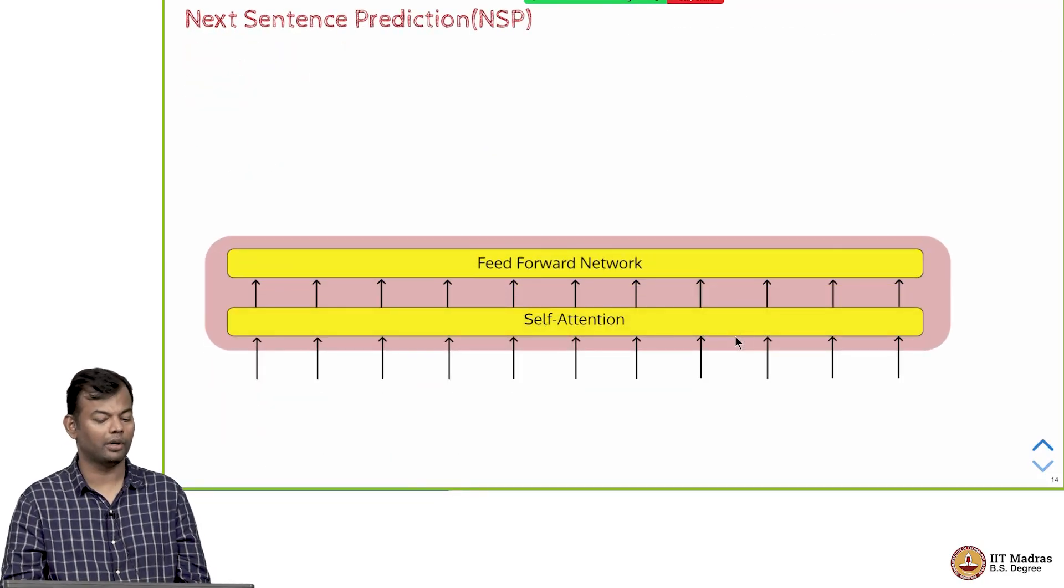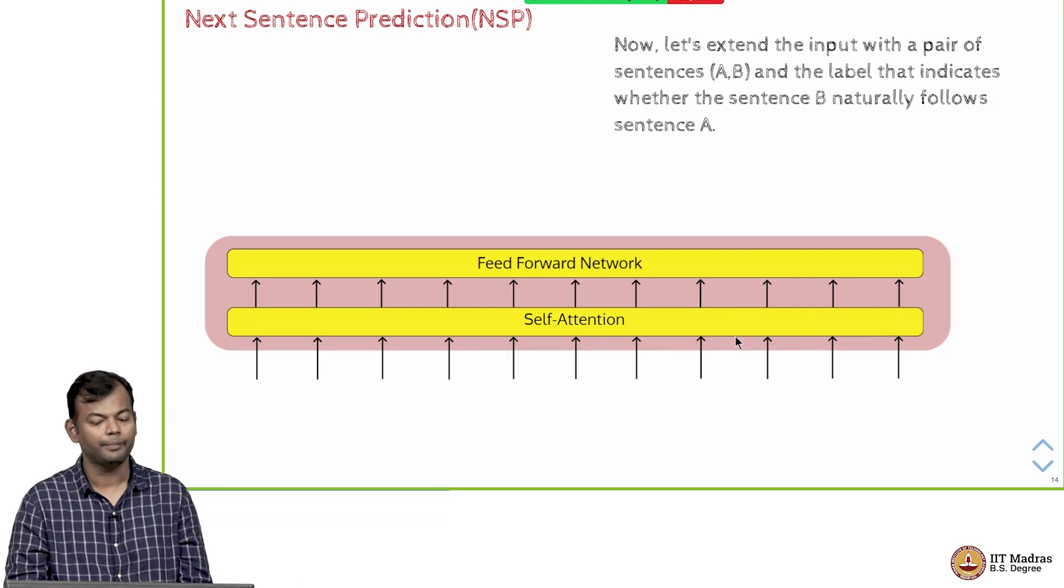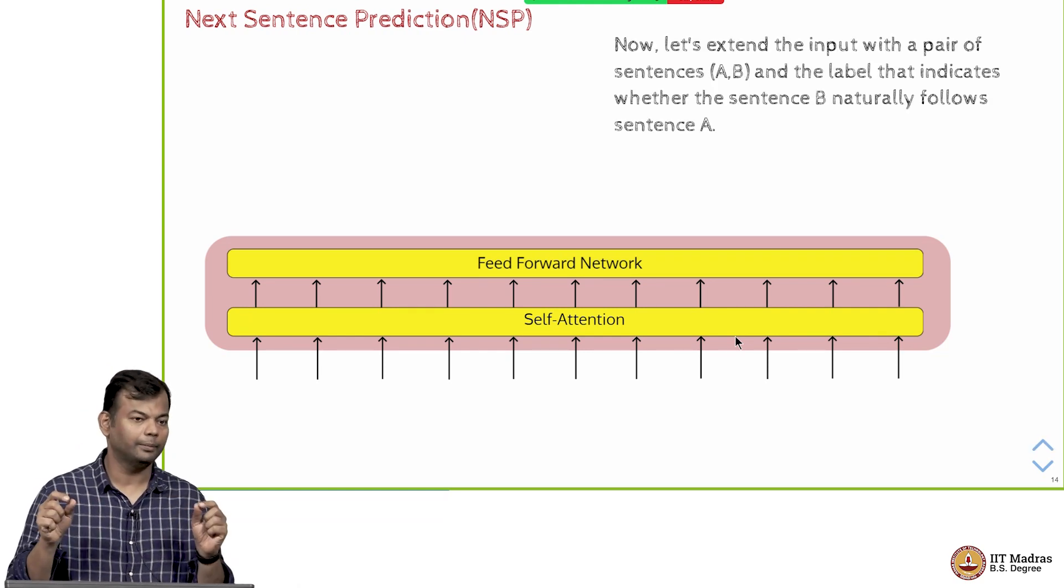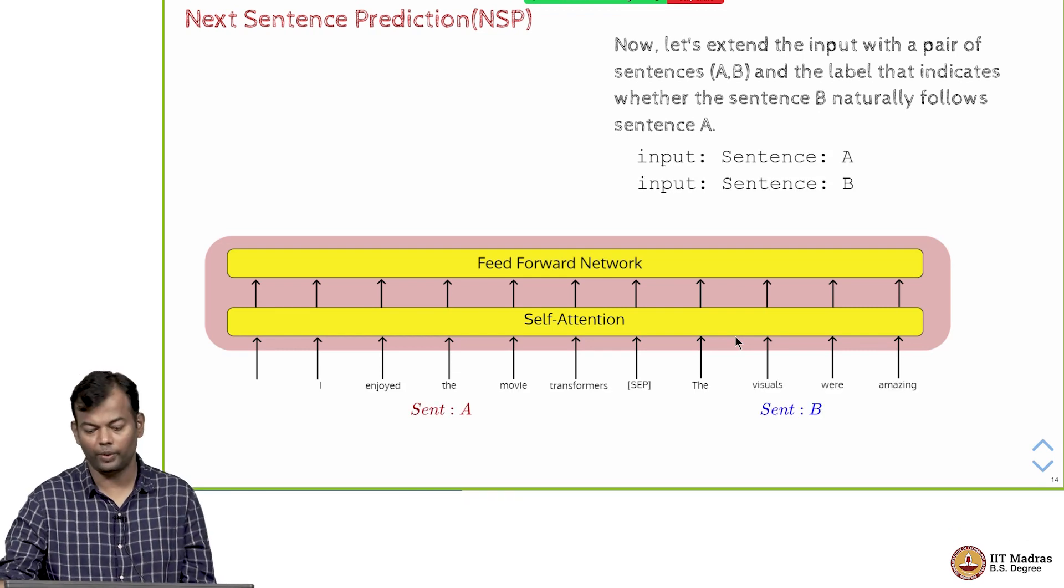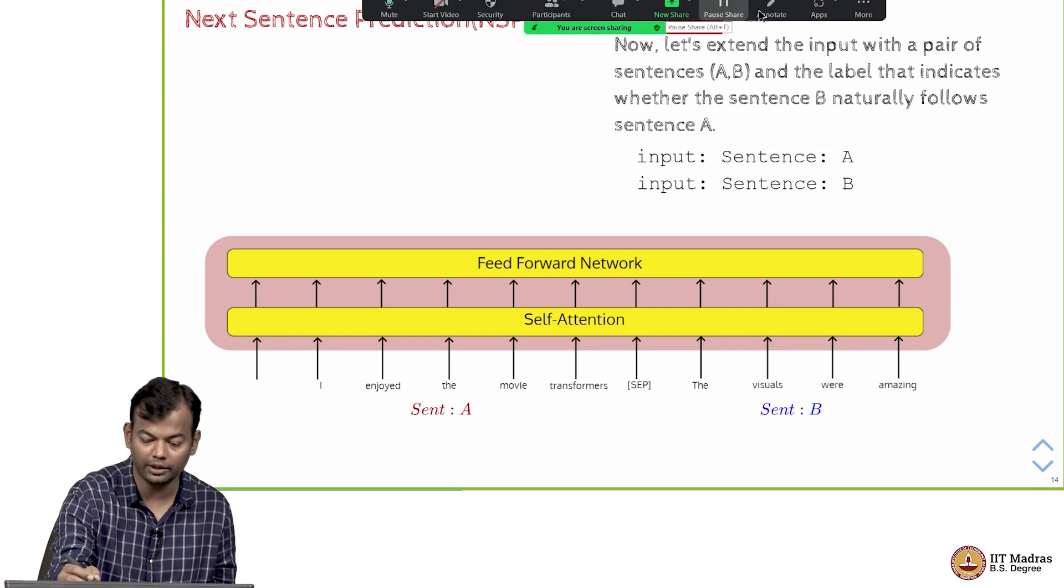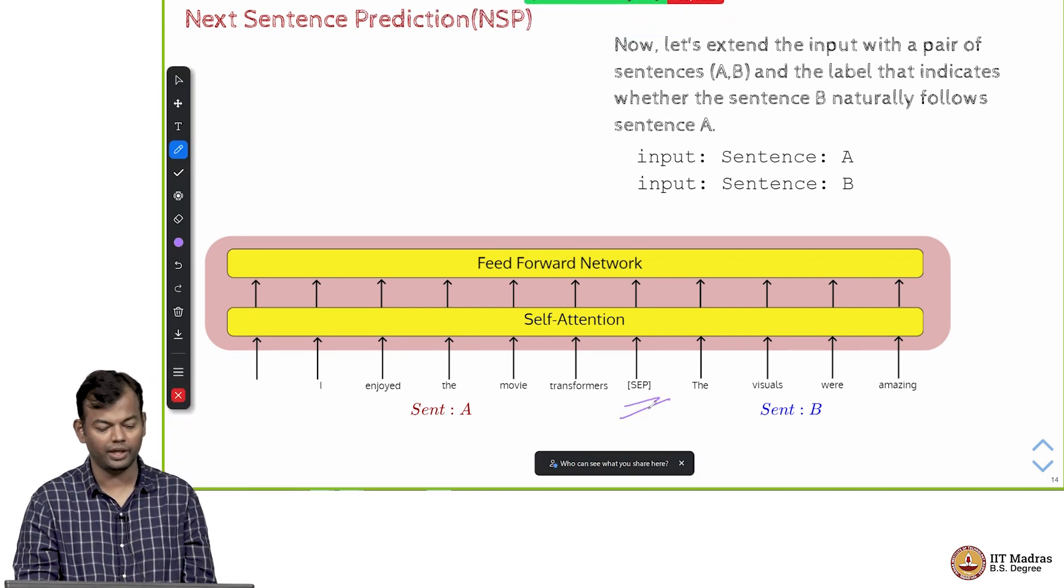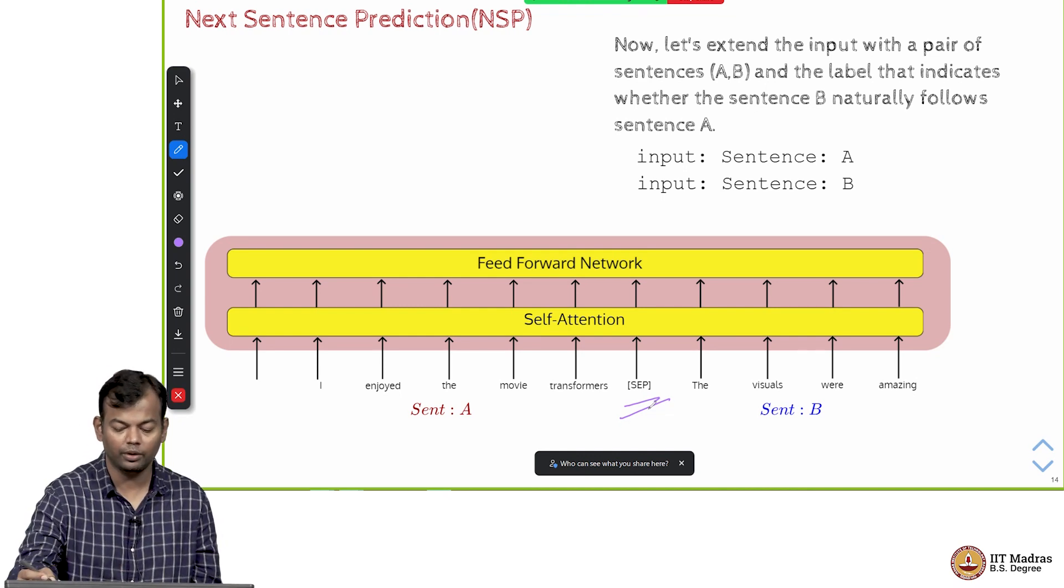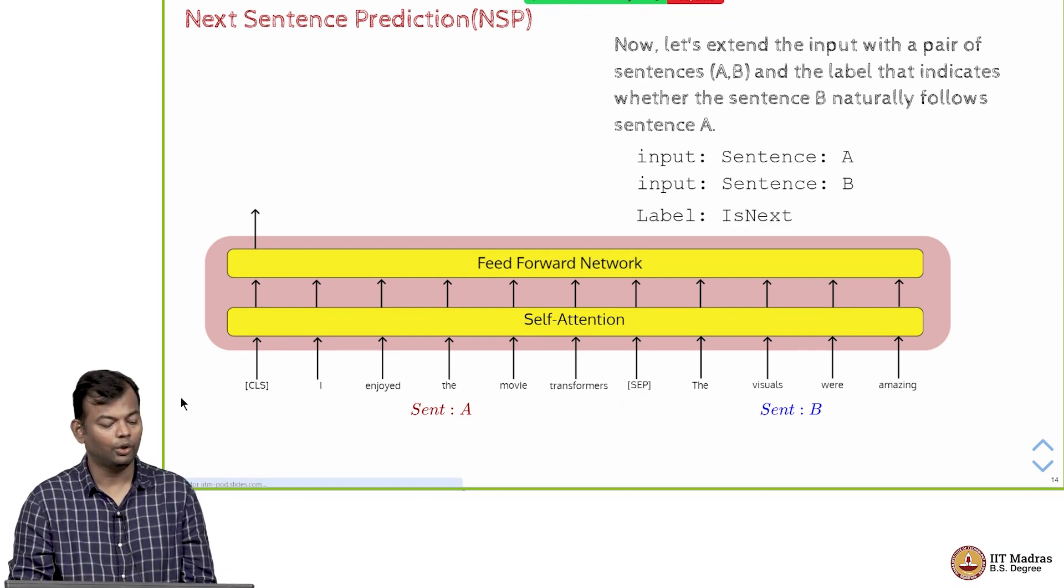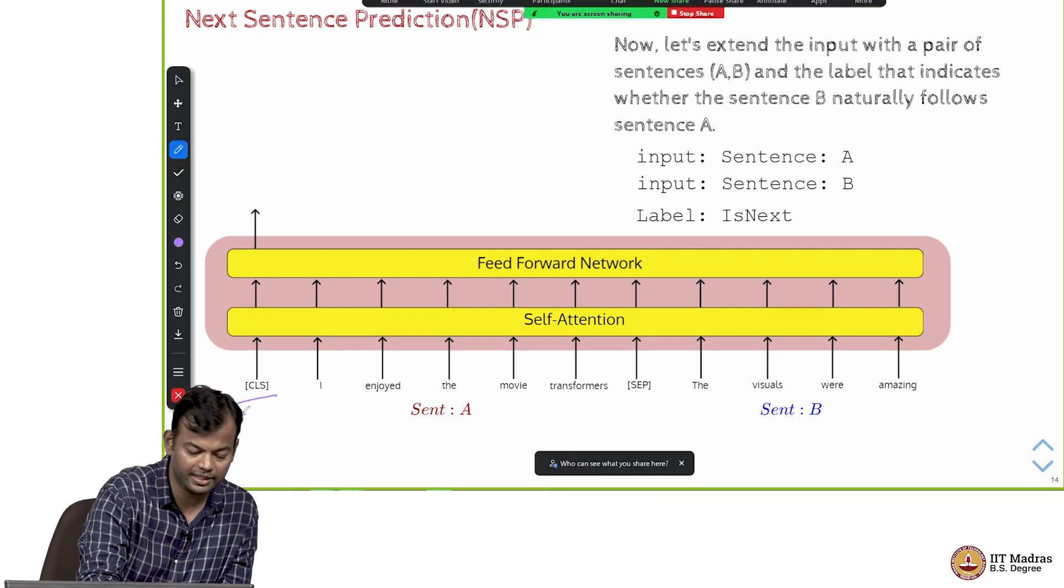They introduced one more objective function which was the next sentence prediction. During training they give pairs of sentences A and B with a special token called the separator token in between. This is sentence A and sentence B, and they also introduced another special token called CLS.